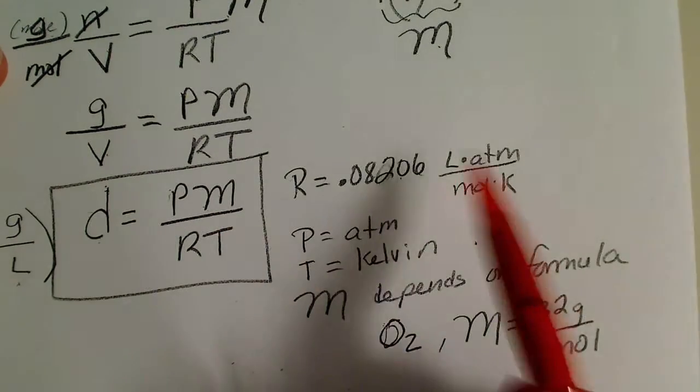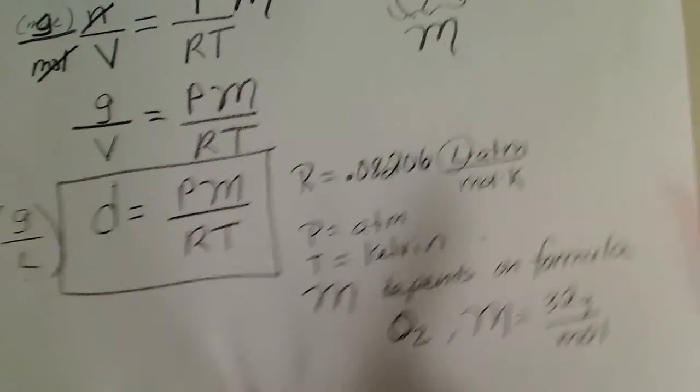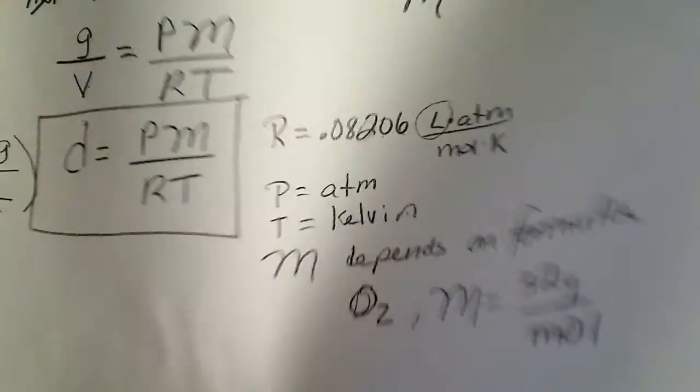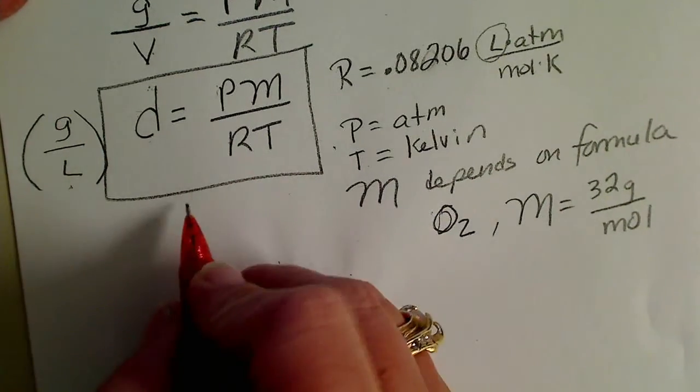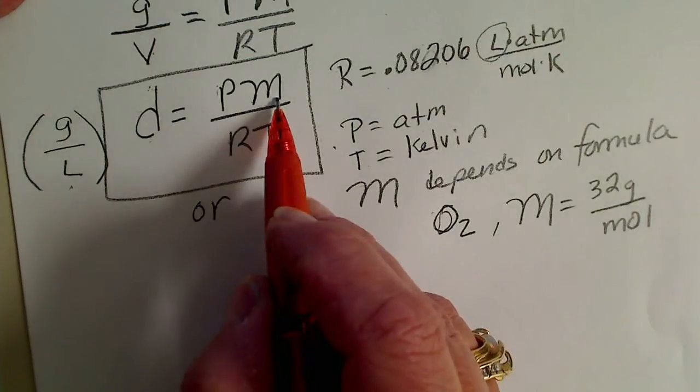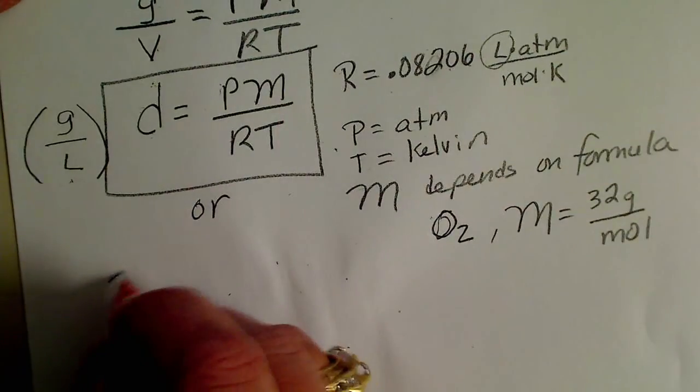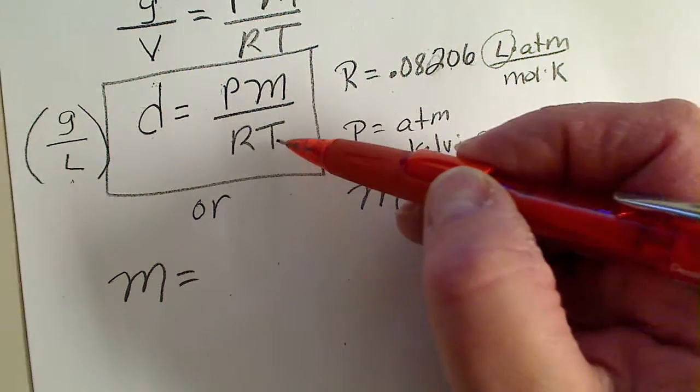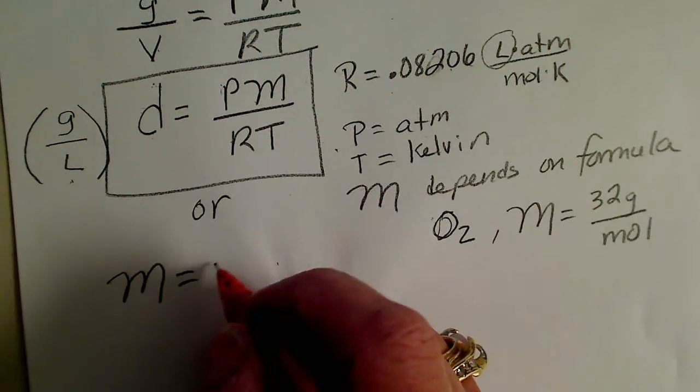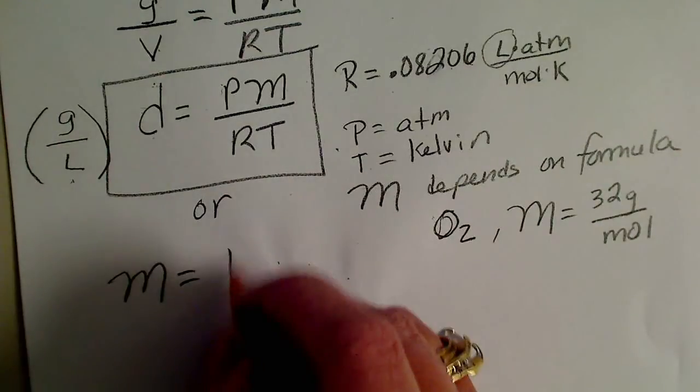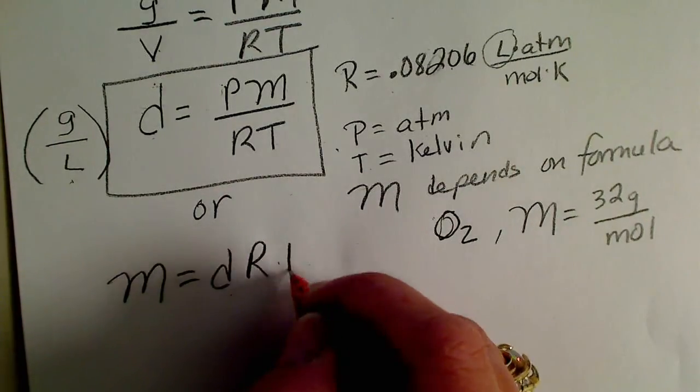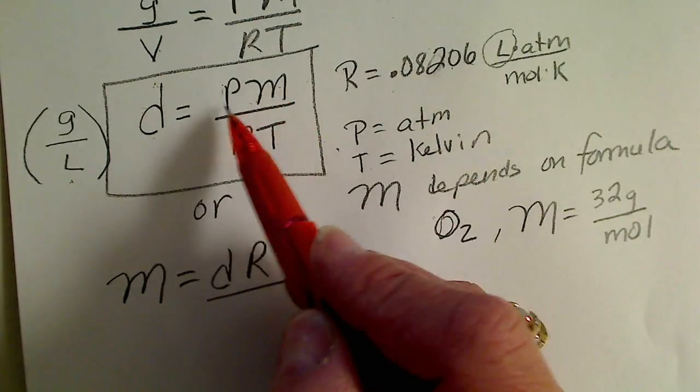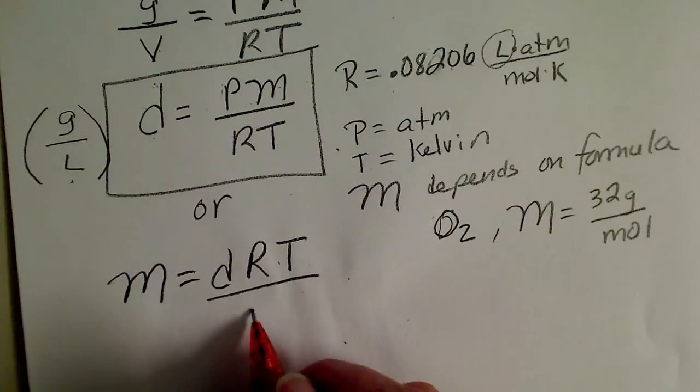And for this R constant that we are using, the liter will be built into that. If we rearrange this equation, we could solve for the molar mass. So if we're solving for molar mass, we want to multiply both sides by RT. And so we would get density times the gas constant R times the temperature. And then to get the M by itself, we divide both sides by P, pressure.